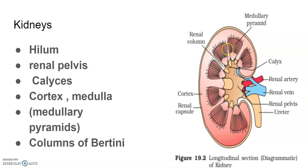These conical masses are called medullary pyramids, projecting into the calyces. The cortex extends in between the medullary pyramids as renal columns, which are called the columns of Bertini. This is the overall structure of the kidney as seen in a longitudinal section.